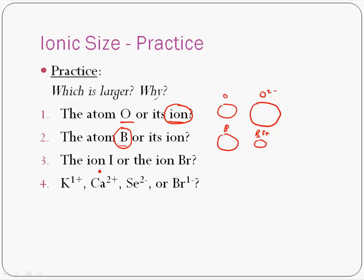Now, what if we're comparing two ions that are in the same group? Well, remember the snowman principle, things get bigger as you go down the periodic table. So iodine is lower on the periodic table than bromine is. Therefore, iodine is going to be bigger.